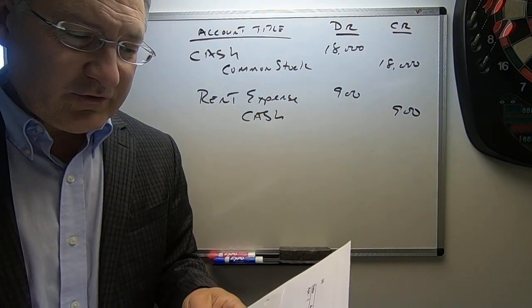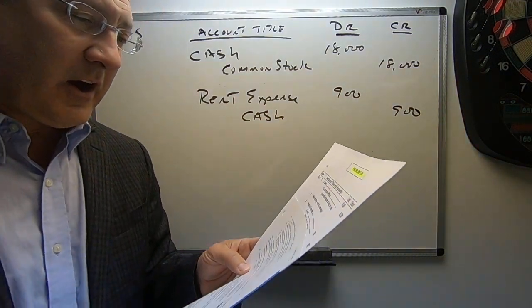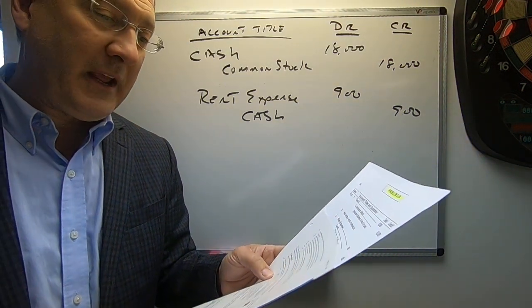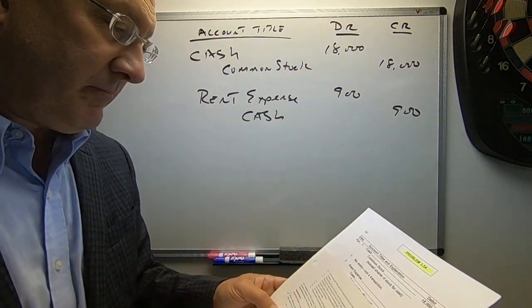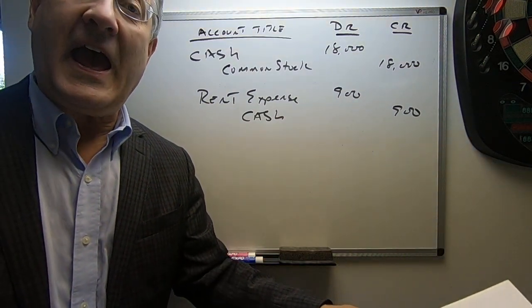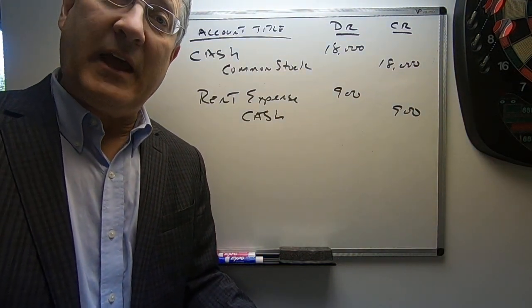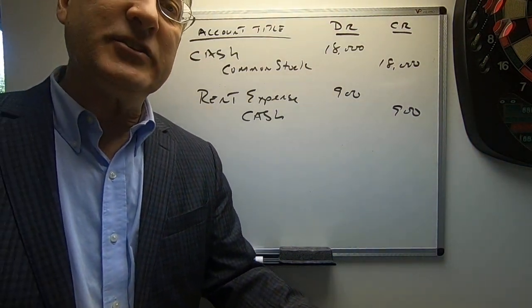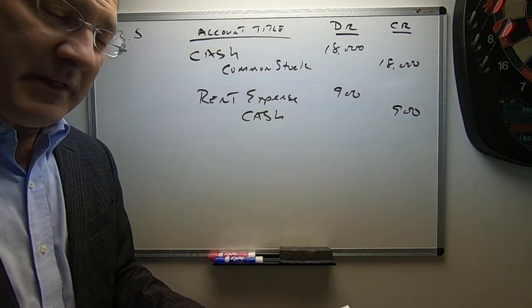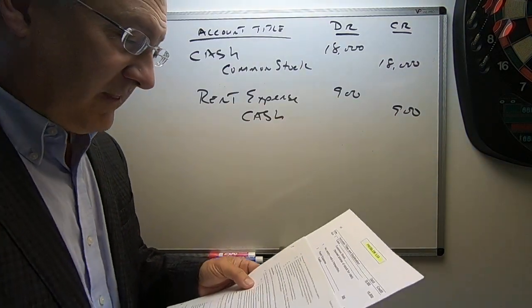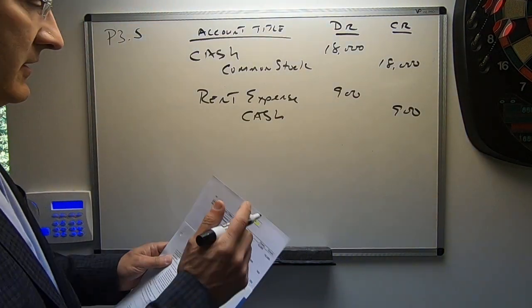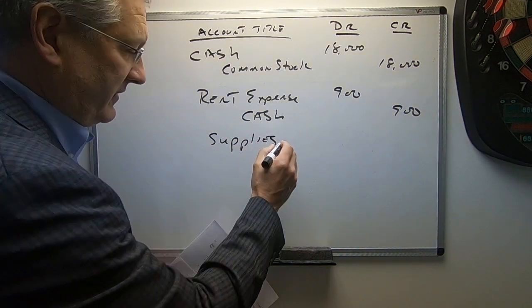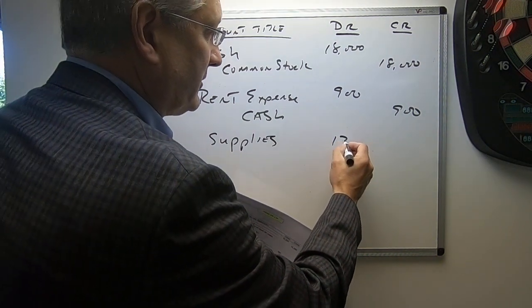Next transaction: purchased architectural supplies on account from Birmingham Company for $1,300. They purchased supplies — that's an asset — and we increase an asset with a debit. They purchased it on account, meaning an obligation to pay, which is a liability. We increase the liability with a credit. So we're going to debit supplies as an asset for $1,300 and credit accounts payable for $1,300.